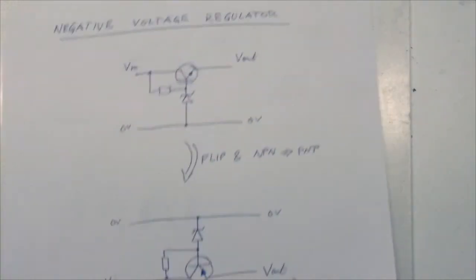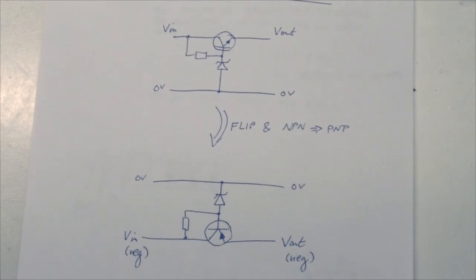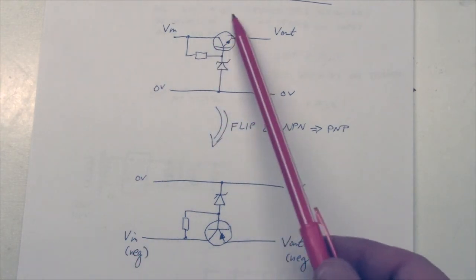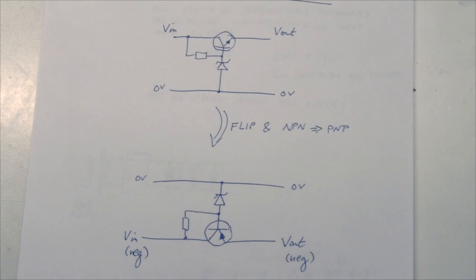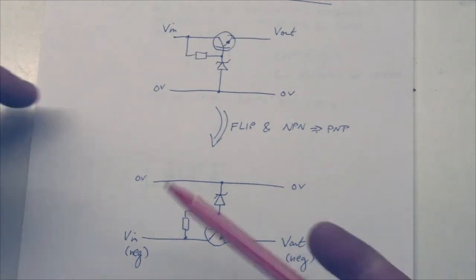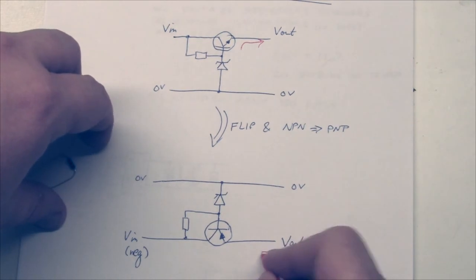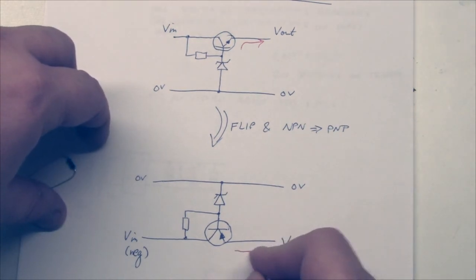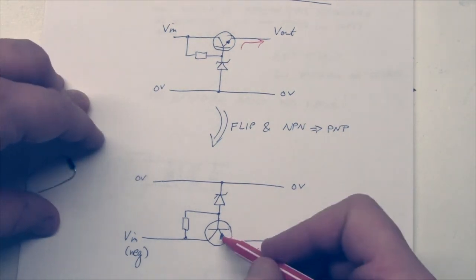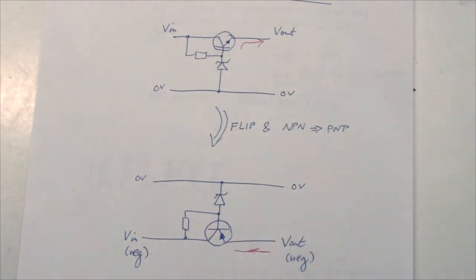Now you may ask how do we do negative voltage regulators. It's very straightforward - we do that just like any other positive to negative conversion. We basically just flip the circuit. The positive voltage becomes a negative voltage, and we change the transistor from an NPN to a PNP. Because in positive circuits we have current flowing out, and in negative voltage circuits we have current flowing in. So we just flip the arrow on the emitter.